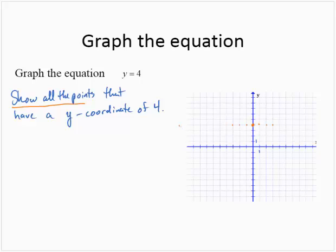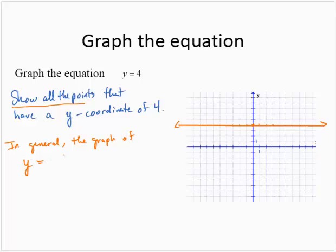Drawing that line — there's the line y equals 4. In general, the graph of y equals k, where k is some number, is a horizontal line through (0, k).